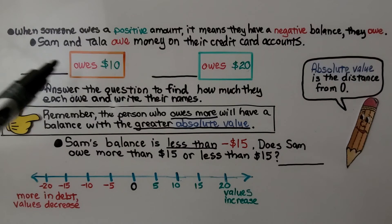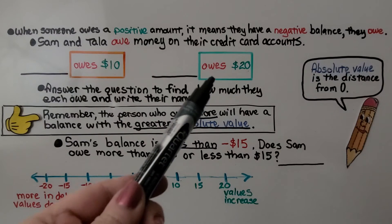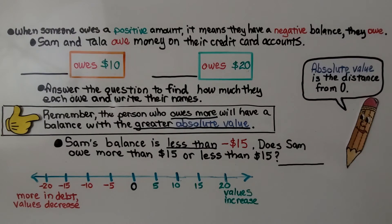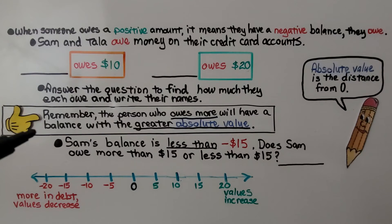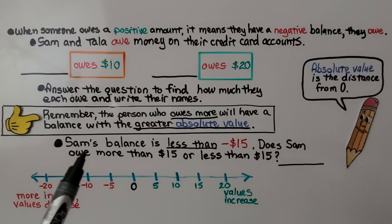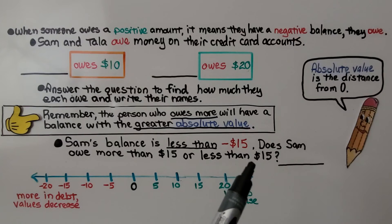Sam and Tala owe money on their credit card accounts. One of them owes $10 and the other owes $20. We need to find how much they each owe and write their names on the lines. Remember, the person who owes more will have a balance with a greater absolute value. Sam's balance is less than negative $15 — so does Sam owe more than $15 or less than $15? Remember, the more in debt we are, the farther left on the number line the value will be.